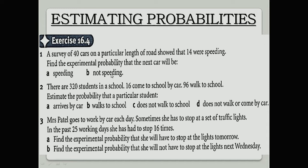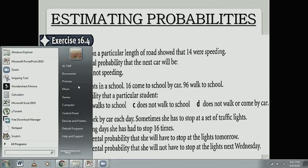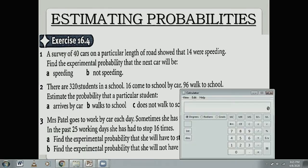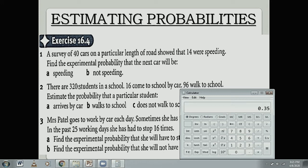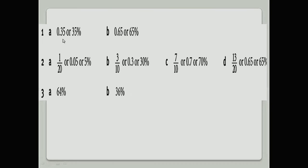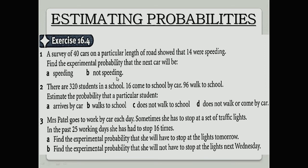So what is the probability that the next car will be speeding? 14 divided by 40. So you will get your answer as you can see here. 14 divided by 40, you will get your answer 0.35. So here is your answer, 0.35 or 35 percent.